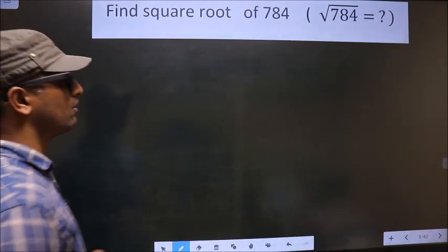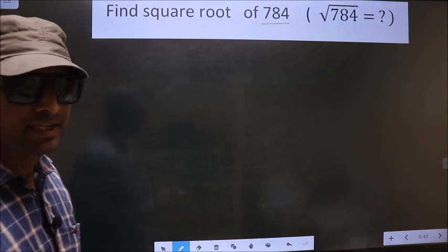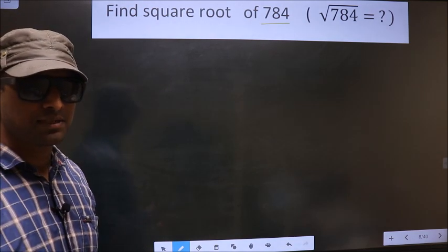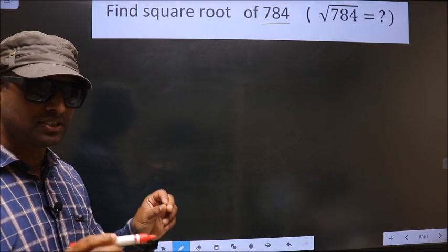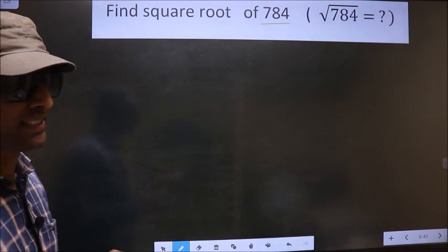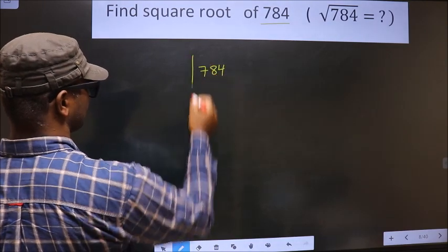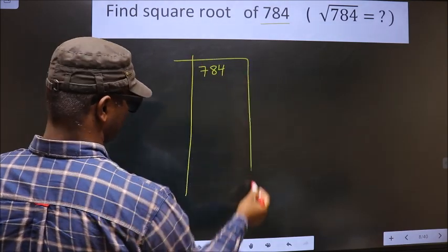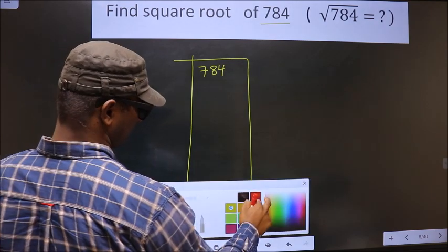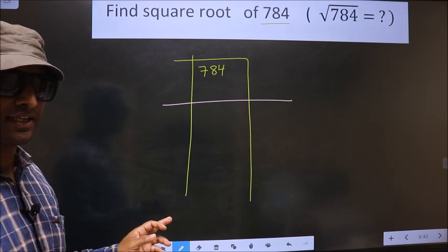Find square root of 784. To find the square root by long division method, first we should frame it in this way. That is C. 784.